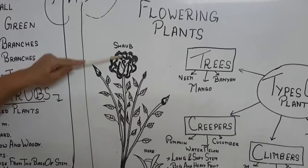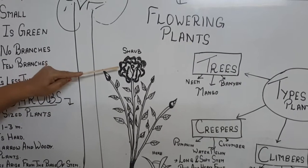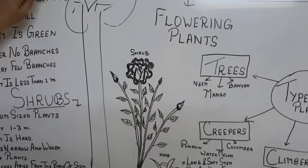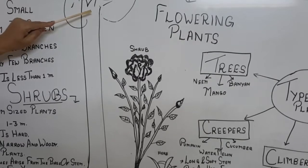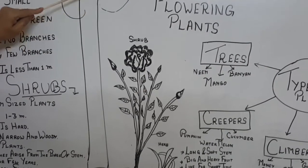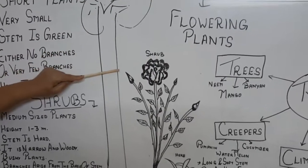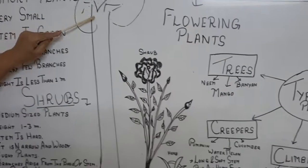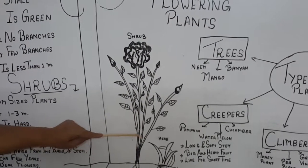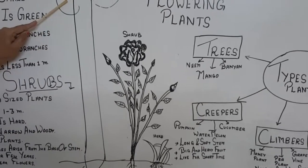When we talk about shrubs, these plants are of medium size. You can make out the difference: herbs are very short, shrubs are of medium size. The shrubs are branching right from the base. And when you look at trees, they are very tall. Trees start branching at the top of the trunk. The trunk is a very long, woody, very hard stem, and the branches start arising at the top.